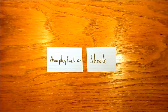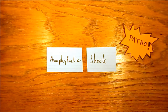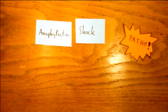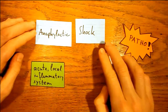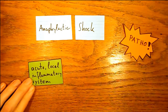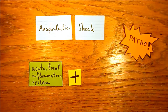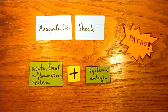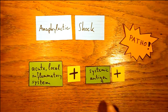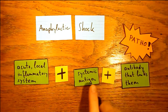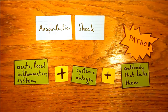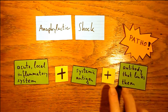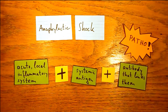Let's look at the pathophysiology of an anaphylactic shock. There's an unfortunate combination of three ingredients. First, there's an inflammatory system that normally acts locally, at the exact site where a microorganism finds its way into the body. Then there are substances that get spread throughout the body globally, for example by injection or by ingestion. And finally, there's a special antibody that sometimes gets sensitized to such a substance, even though it might not be harmful at all. The bad luck is that it's exactly this antibody that can trigger the inflammatory system from point one.